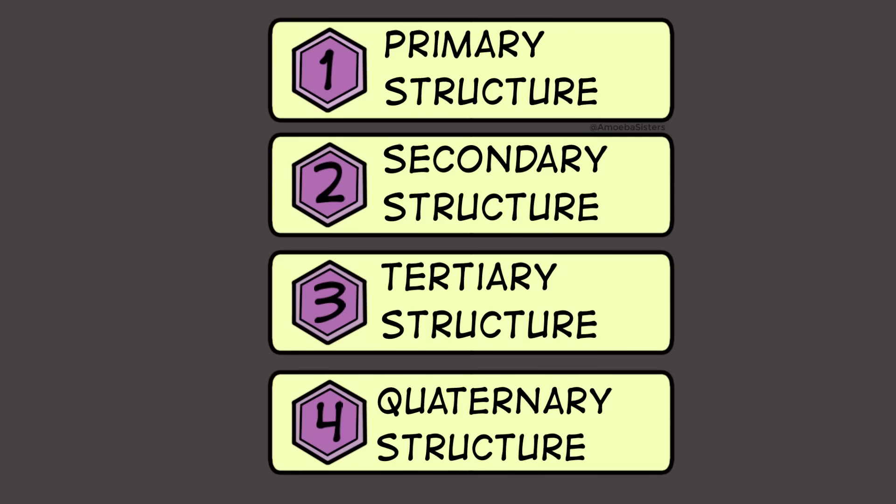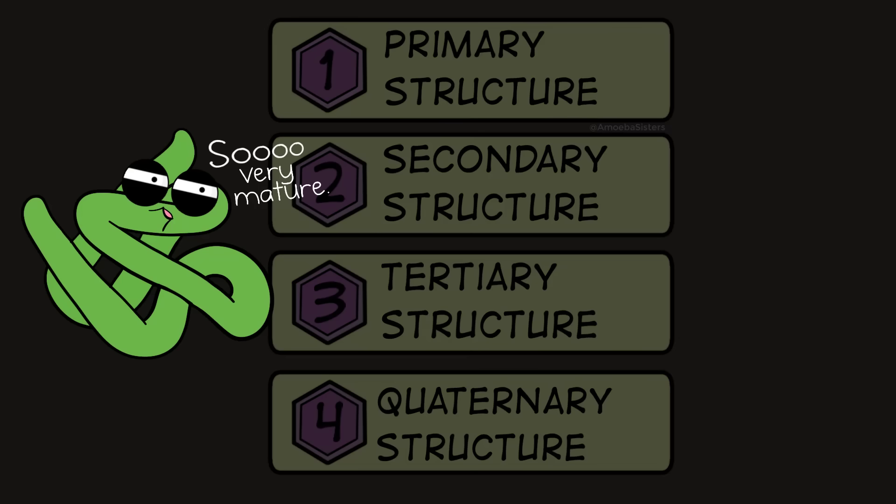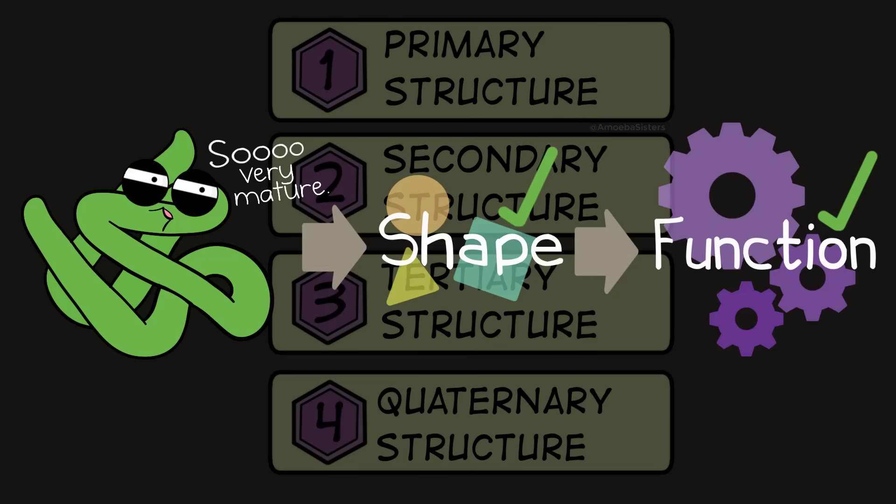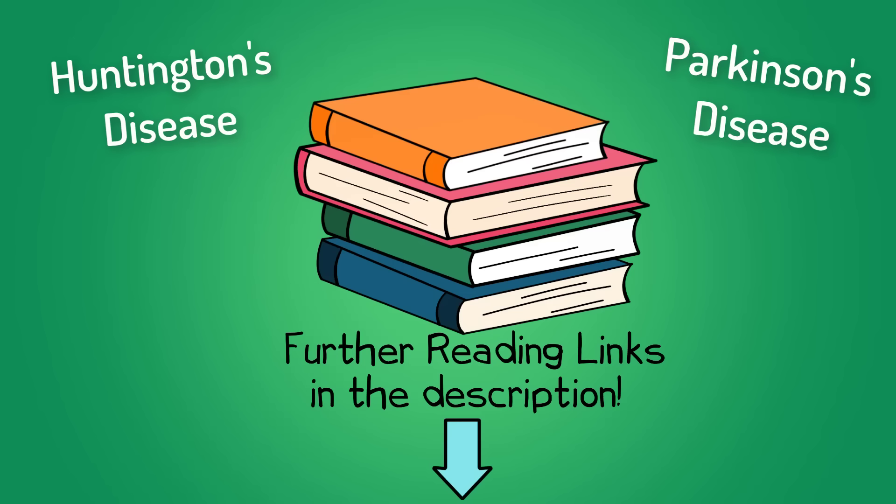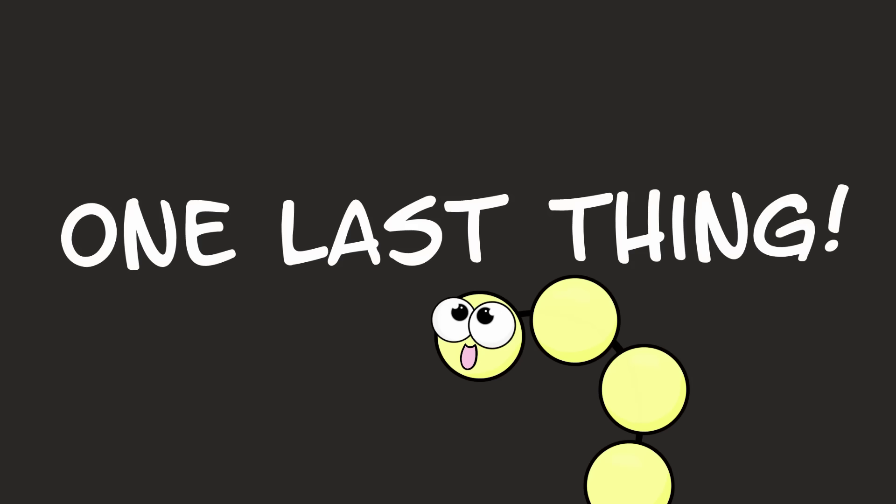All of these interactions we mentioned in primary, secondary, tertiary, and quaternary structure are paramount for a mature protein to have its correct shape so it can carry out its function. And that's very relevant—there are many diseases that are related to protein misfoldings. Check out some of our further reading suggestions in the description about that.